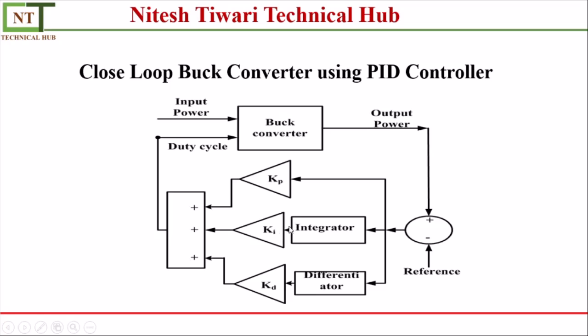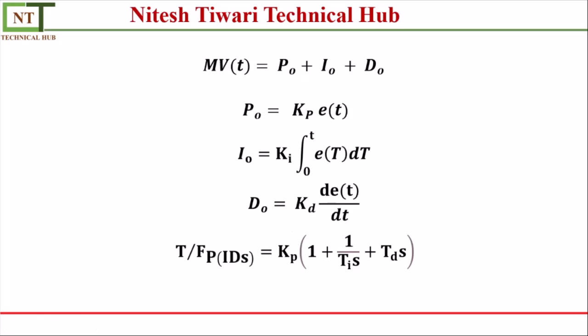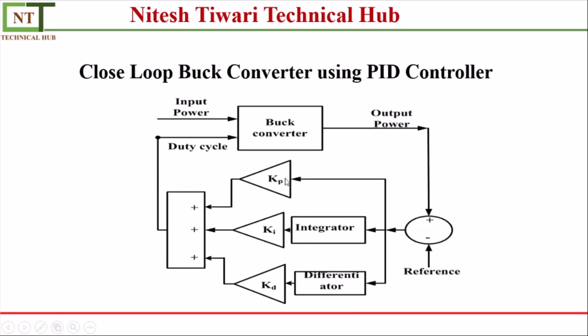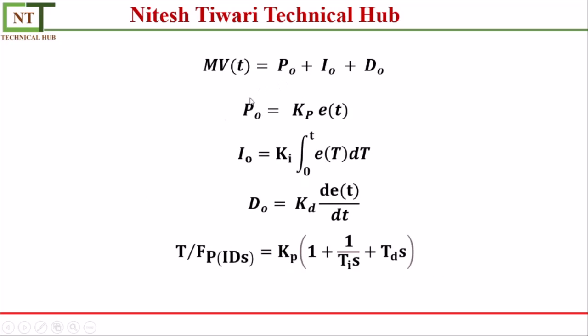So this is the basic structure of PID controller where KP, KI and KD is the gain block. This is the integrated block, this is the differentiator block. And we have to sum these three parameters and then our output will come out. So for modeling of this PID controller, we have to understand this basic equation of PID controller where the total output is MV(t) = P0 + I0 + D0. And P0 value is KP e(t), I0 value is KI integration 0 to t e(T)dT, and D0 is KD differentiation of e(t) with respect to dt. And this is the equation of the transfer function of PID controller.